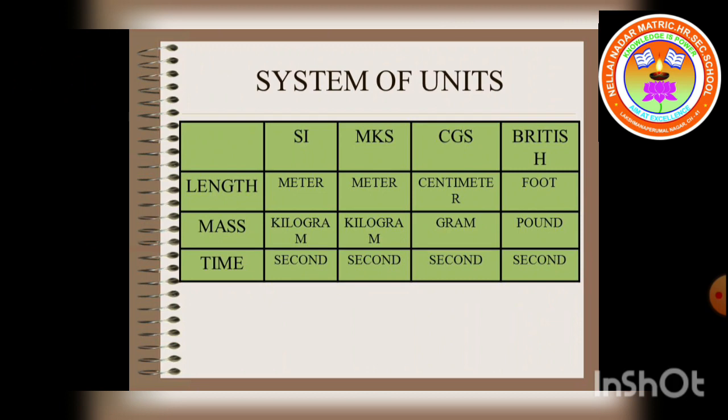Mass. In SI system, we are measuring in terms of kilogram. MKS system also we are measuring in kilogram. But in CGS system, we are measuring in terms of gram. In British system, we are measuring in terms of pound. Time. In all the systems, we are using the same kind of unit as second.